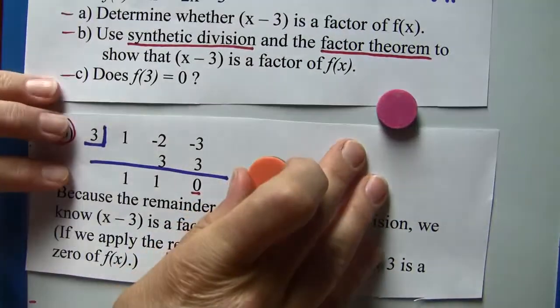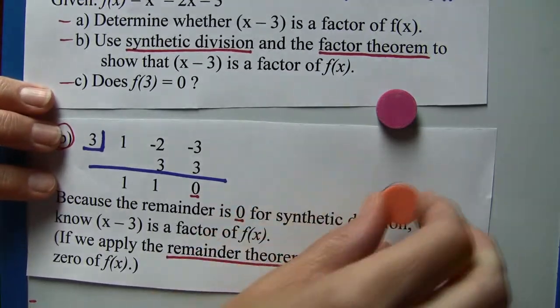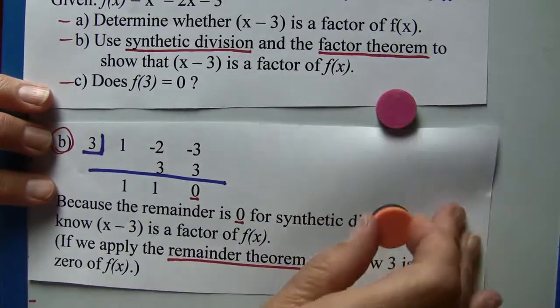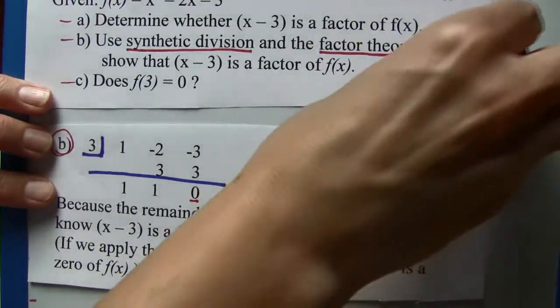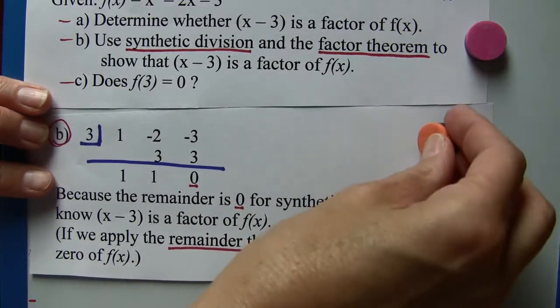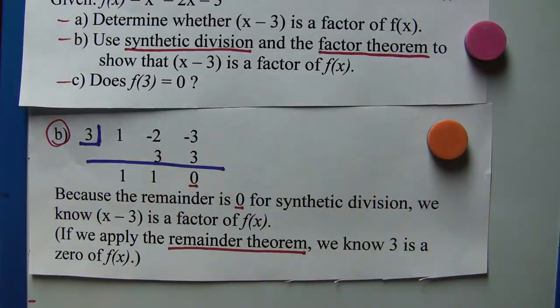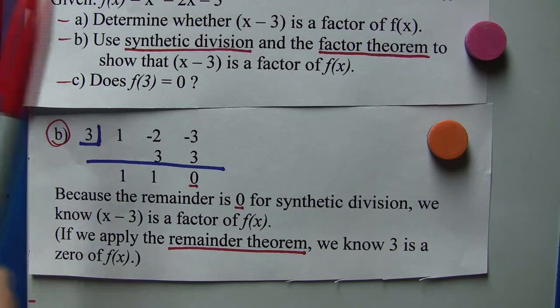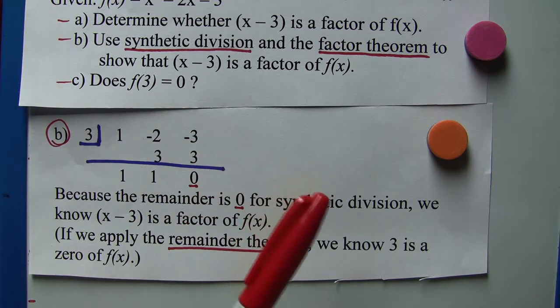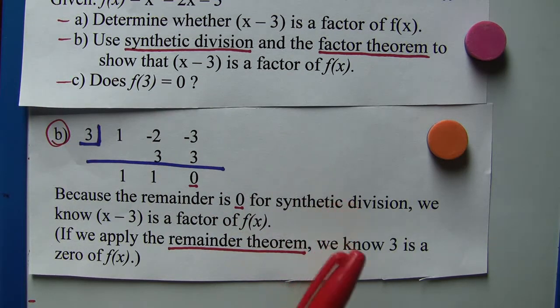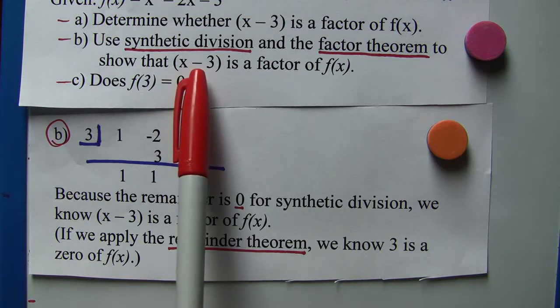Now for part b, it said use synthetic division and the factor theorem to show (x - 3) is a factor of f(x).